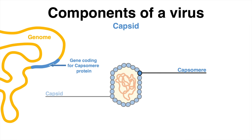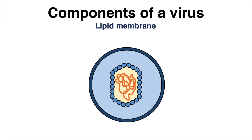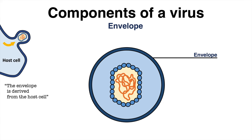In addition to the capsid, not all but some viruses have an external lipid membrane known as the envelope. The envelope lipids are not encoded by the viral genome. Instead, the lipid envelope is derived from the host membrane on the way out of the cell.